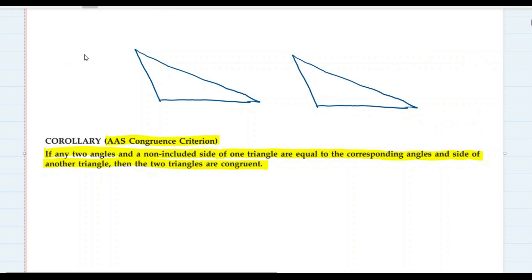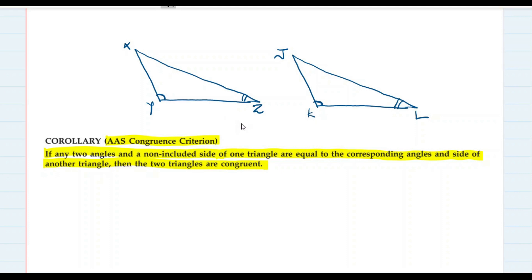Let me draw the figure. I'm taking triangles XYZ and JKL. In these two triangles, two angles are equal: angle Y equals angle K, and angle Z equals angle L. We also have a non-included side — the side is not between these two angles; it can be any third side.